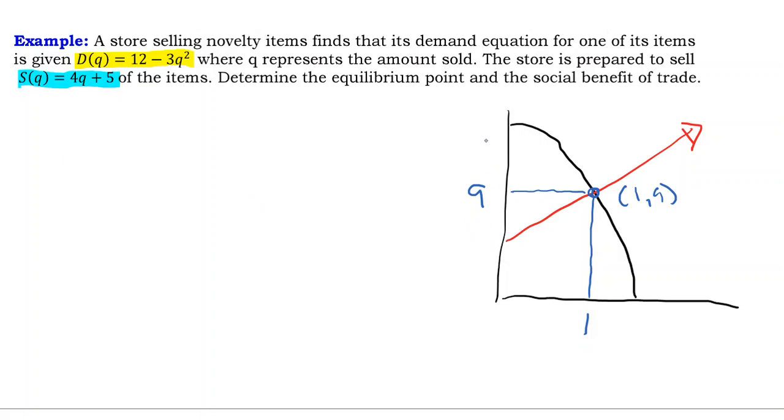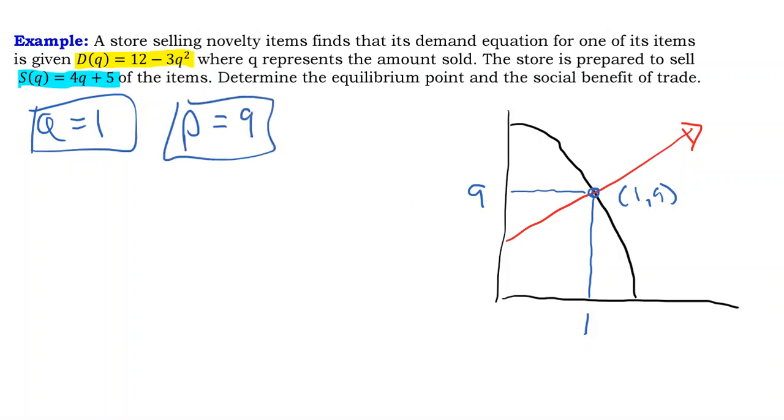Okay, so we found the equilibrium. We found Q. Q is equal to 1. That is the equilibrium quantity. The equilibrium price, just for the heck of it, is P equals 9. The consumer surplus is this area up here. The producer surplus is this area down in here.